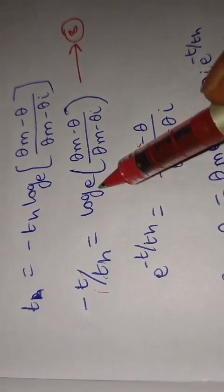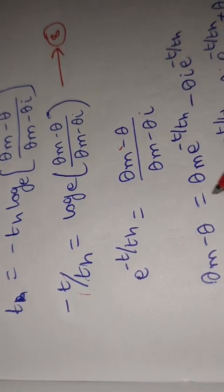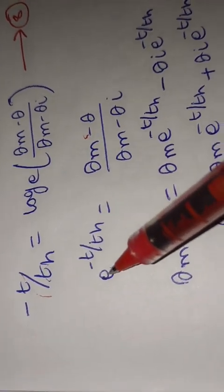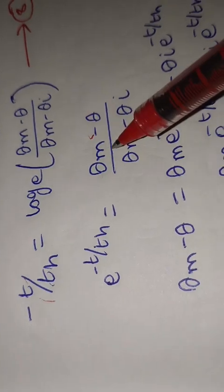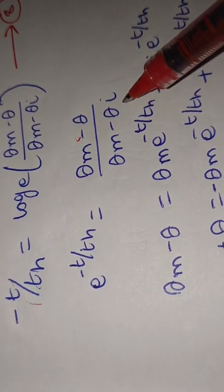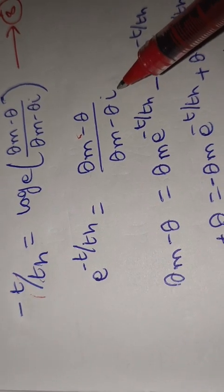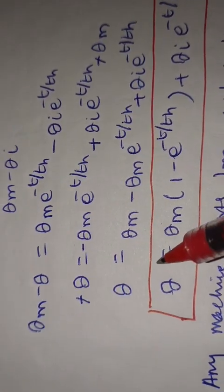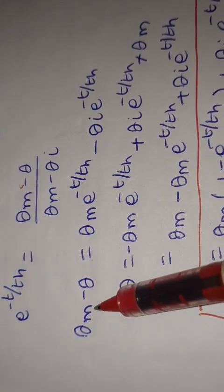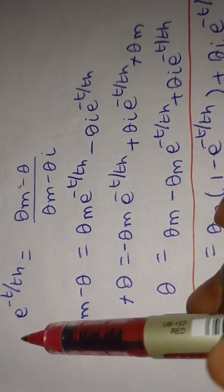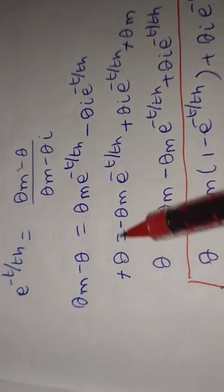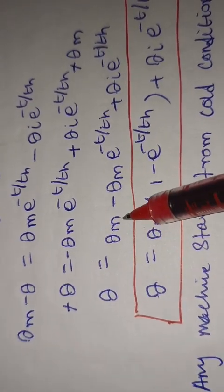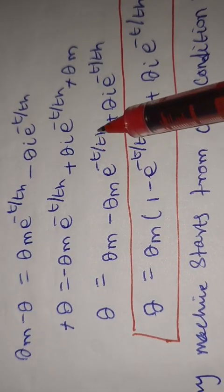To eliminate the logarithm and obtain the actual temperature rise, we exponentiate both sides: e^(−t/T_H) = (theta_m − θ) / (theta_m − theta_i). Rearranging: theta_m − θ = (theta_m − theta_i) · e^(−t/T_H), and therefore: θ = theta_m − theta_m · e^(−t/T_H) + theta_i · e^(−t/T_H).